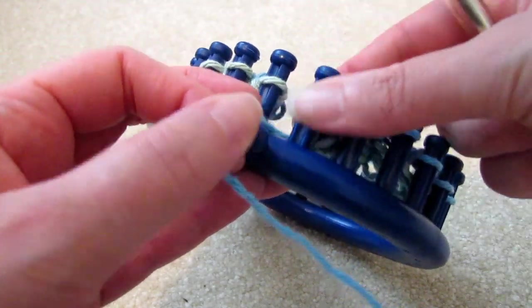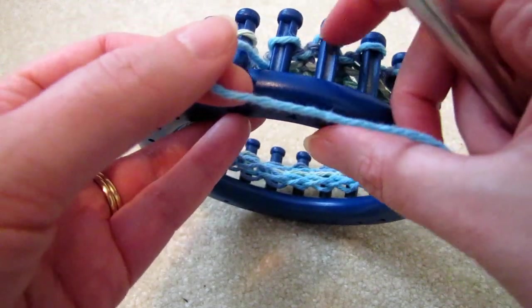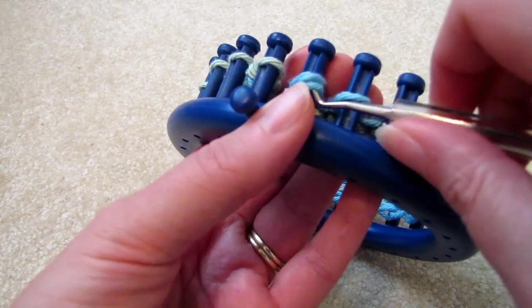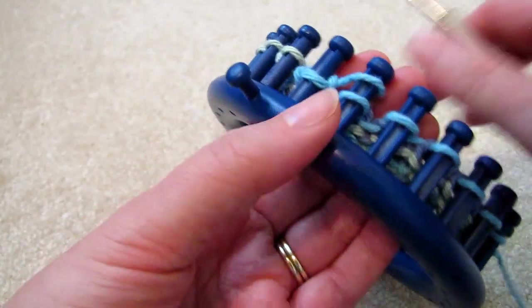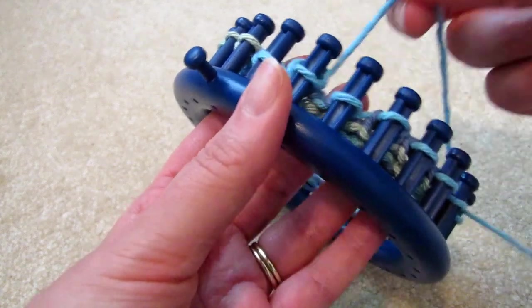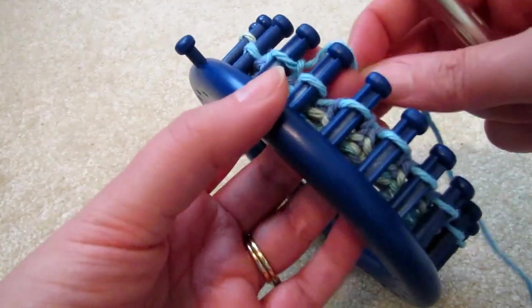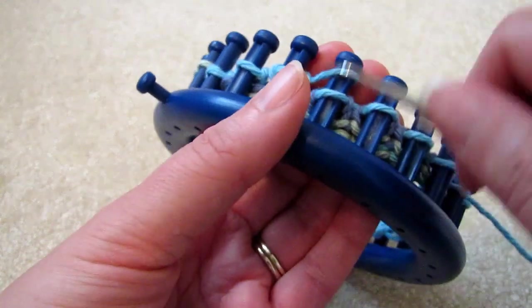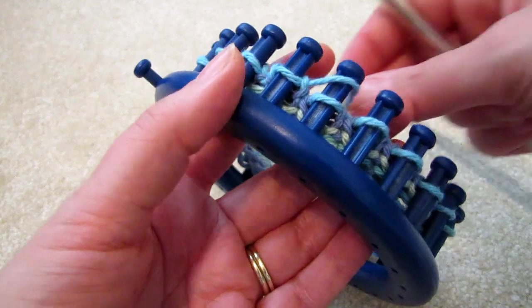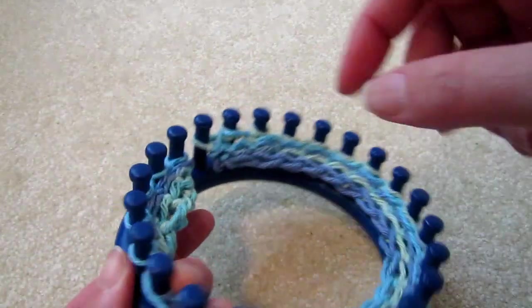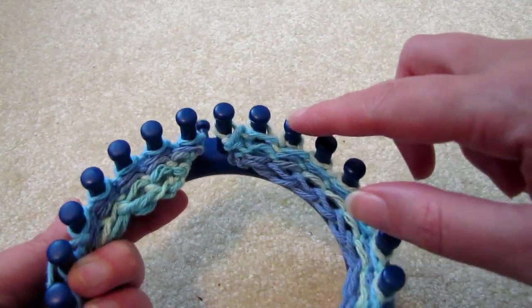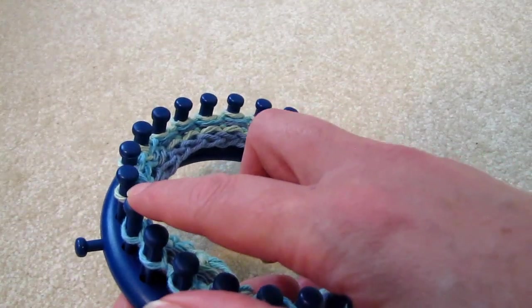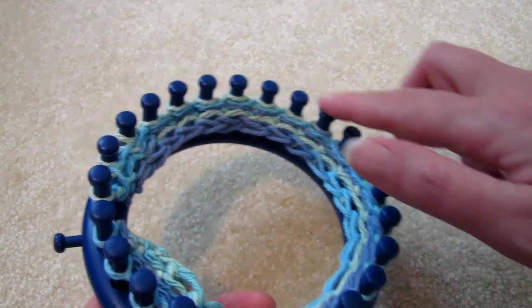Every even row, which is from left to right, knit. So once again, knit this whole row and continue doing this for the next maybe 30 rows or so. So the odd rows: purl three, knit the rest, purl three. The even rows: knit.